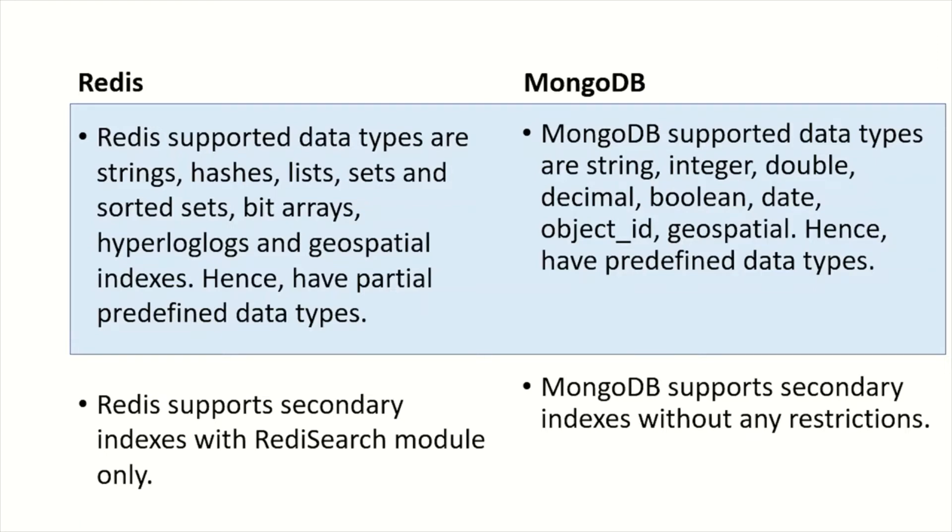Redis supports multiple data types like strings, hashes, lists, sets, sorted sets, bit arrays, HyperLogLogs, and geospatial indexes — hence they have partial predefined data types. In MongoDB, you can also see multiple data types like string, integer, double, decimal, boolean, date, object ID, and geospatial, and they have predefined data types.